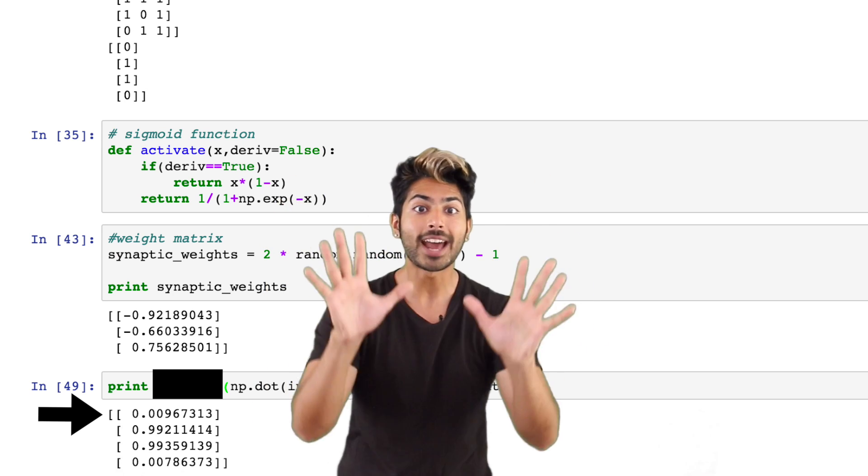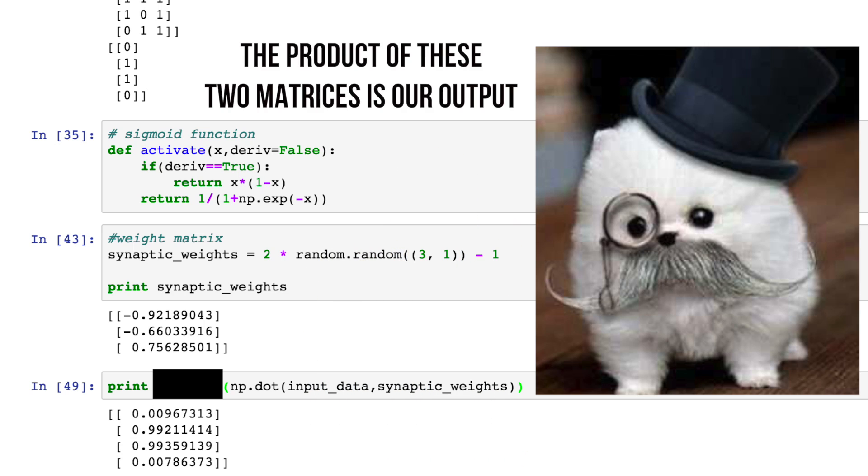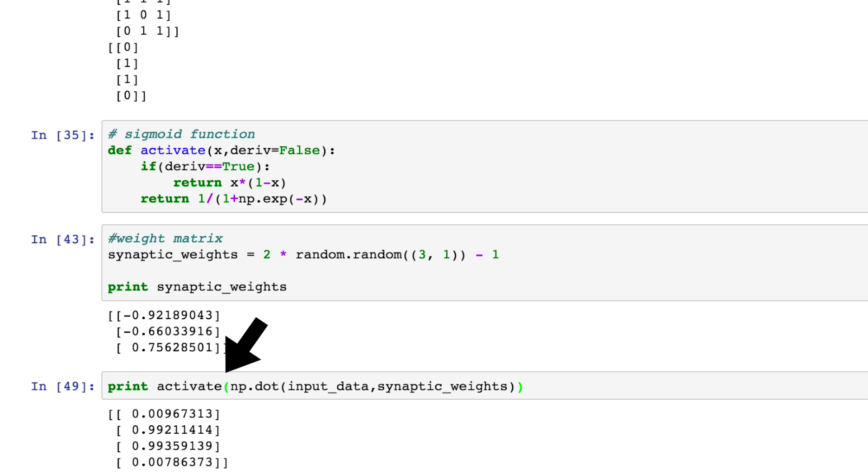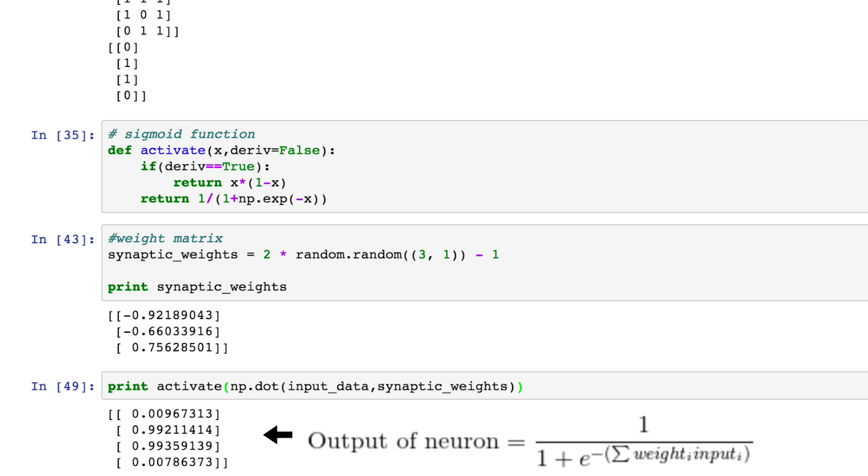But wait, we've got to add something else here. It's not enough to just say, the product of these two matrices is our output. No, we'll need to pass that output into a sigmoid function to normalize, or adjust, the result to probability values between 0 and 1. So multiplying our input by this matrix and passing the result to this activation function gives us an output value. Four guesses, one for each data point.